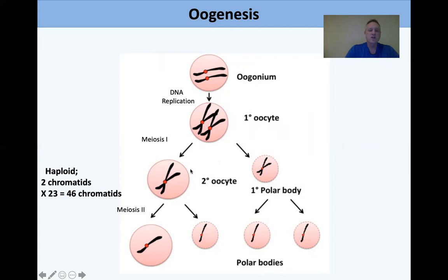The secondary oocyte goes through meiosis two. You also generate a secondary polar body, and you end up with one haploid cell at the very end.